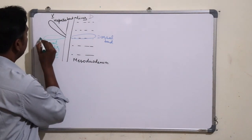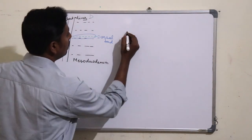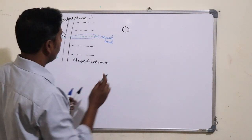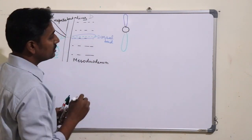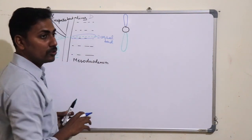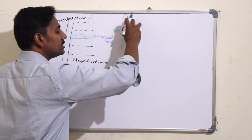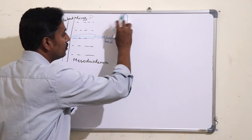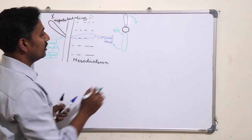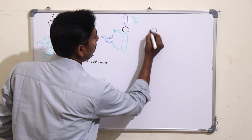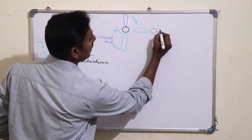Now let us consider that we have taken a section at this level and are viewing it from above. This will be the cut section of the dorsal bud. On the ventral aspect will be the ventral bud and on the dorsal aspect will be the dorsal bud. During development, the duodenum rotates or shifts towards the right by an angle of 90 degrees. Due to this 90-degree rotation, the ventral bud will come to lie on the right side and the dorsal bud will come to lie on the left side.